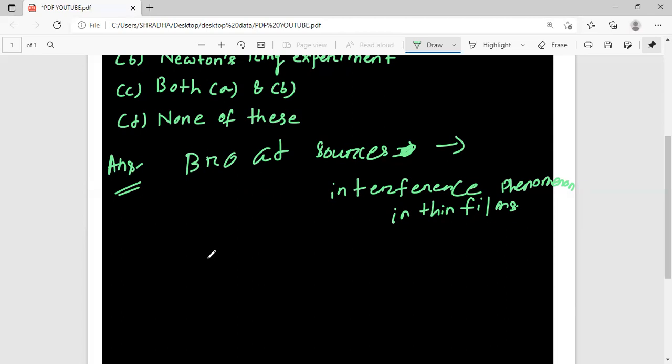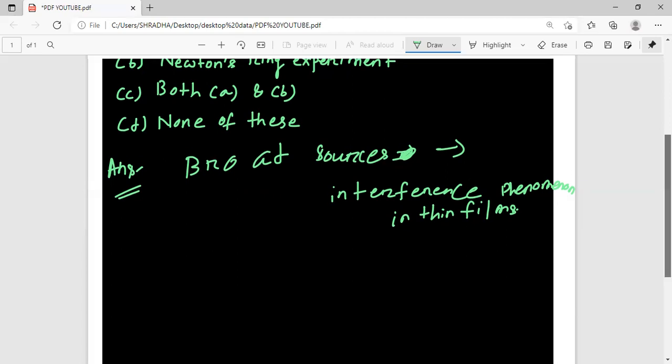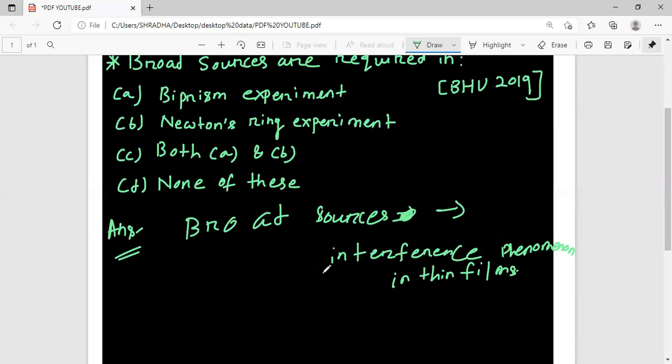So it is the rays of light at different incident angles. Newton's ring experiment. The answer is the Newton's ring experiment.